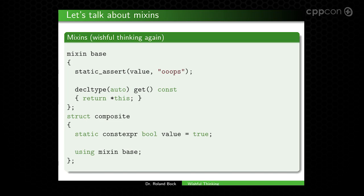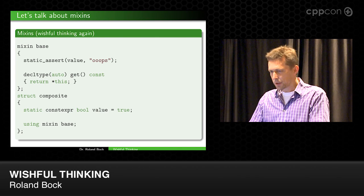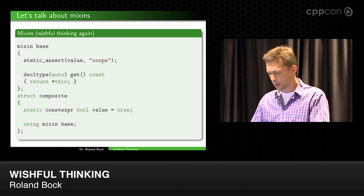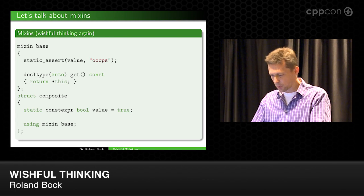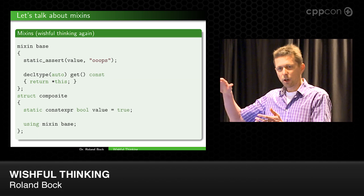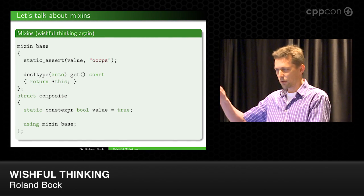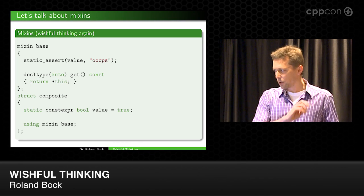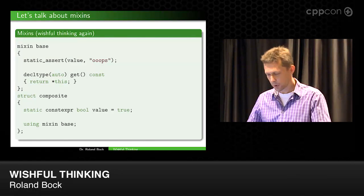So, my second wish is: let's have mixins. A mixin would look like a struct, or could be a template, of course. And the idea is that we are using mixins like we use it here at the bottom, calling 'using mixin' — whatever name we gave it. The idea is that the compiler just copies the body of the mixin to the place where we use it, and then compiles it. That would be cool.